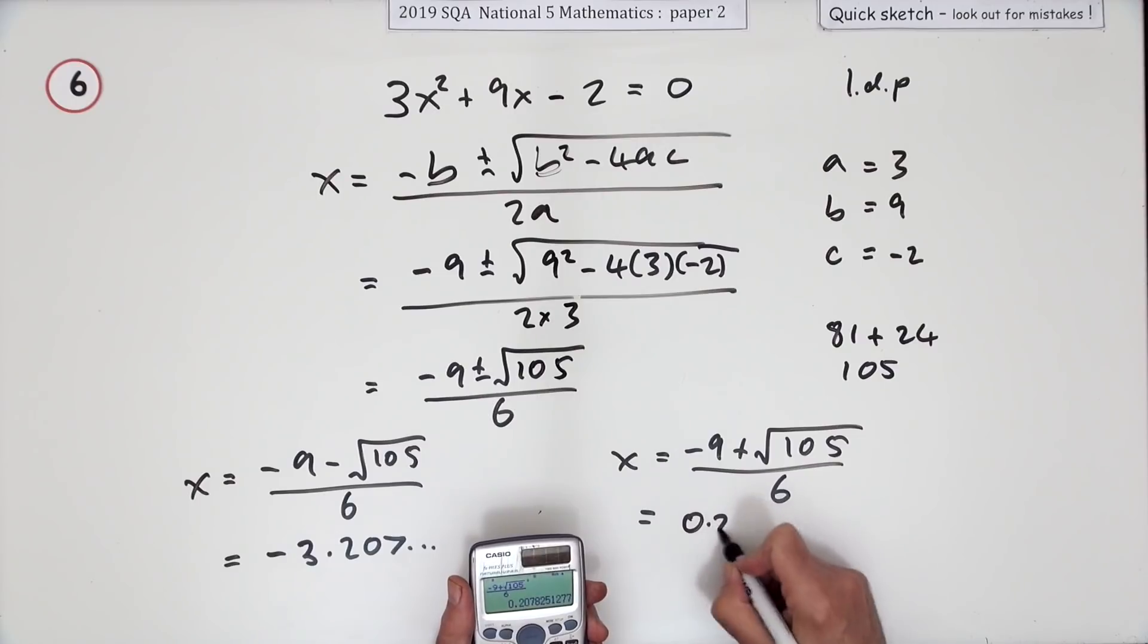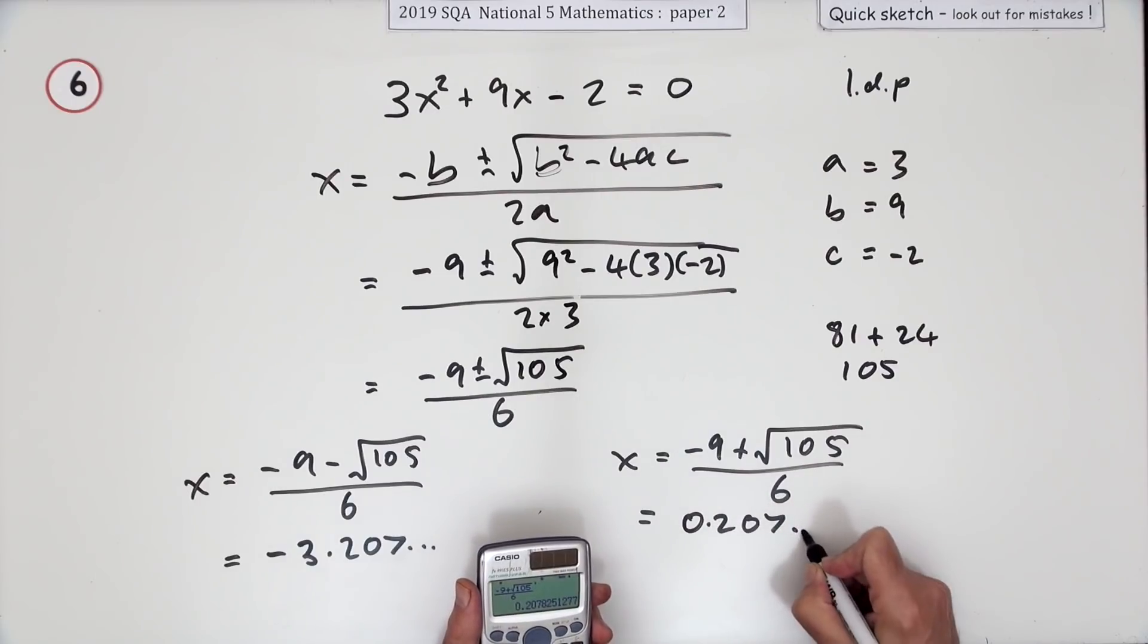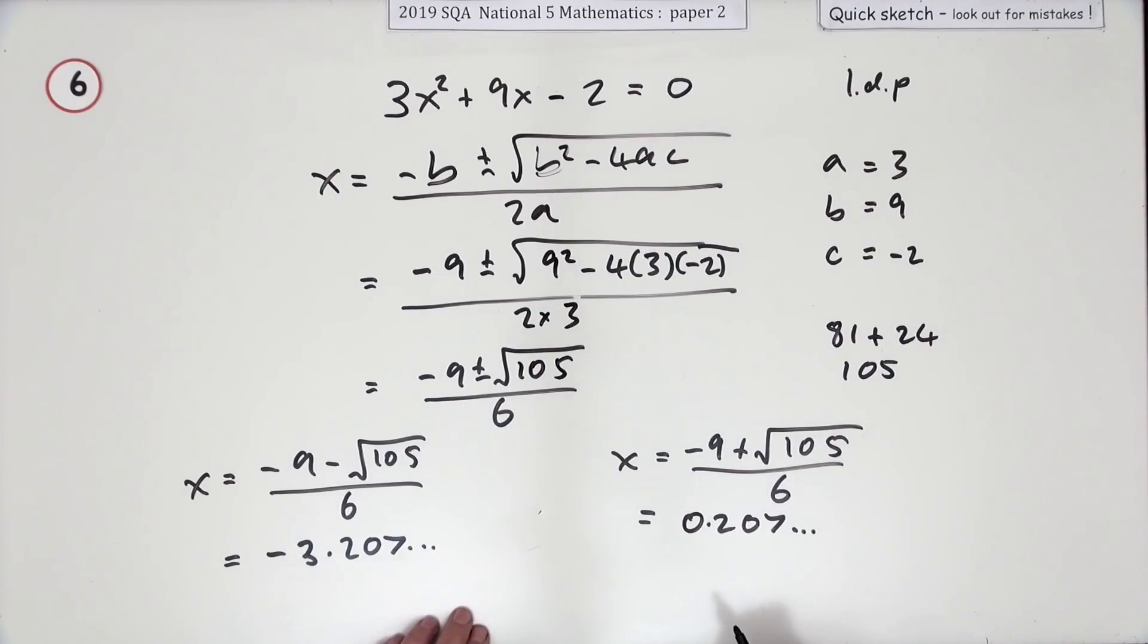And you press the button again, and it goes to 0.2078 and so on, but I'm just going to stop there. Now you only want the answer to one decimal place, so x equals, in this case, negative 3.2, and in this case, 0.2.